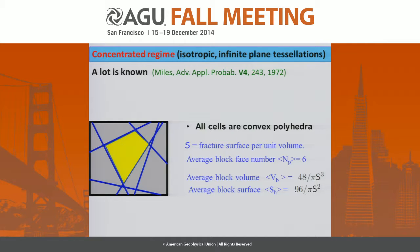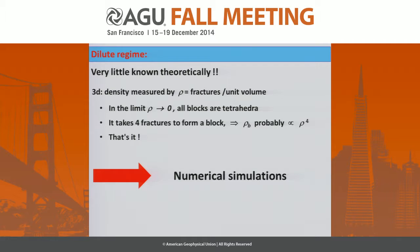At high density, the average block face number is equal to six — so you have a cube on average. You can calculate the average block volume and the average block surface. We have a simple proof of these properties for human beings in our paper. In the dilute regime, it is the opposite — very little is known theoretically.